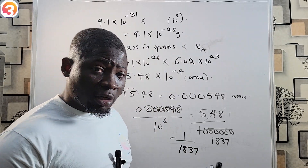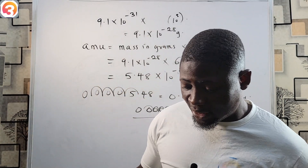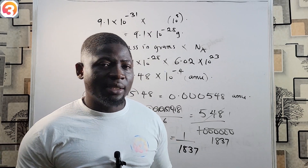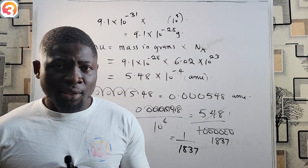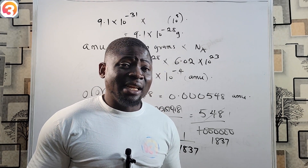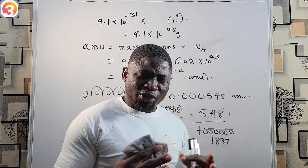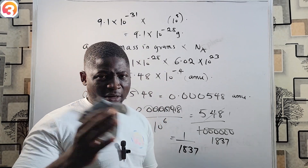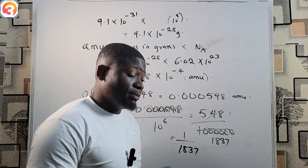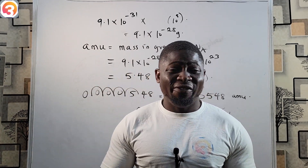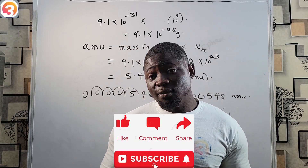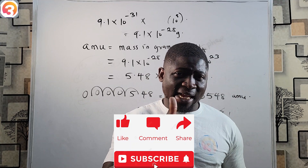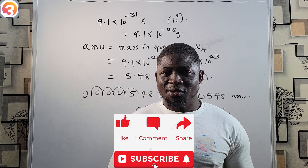This is where I'm going to stop the class. In our next class, we're going to be looking at Rutherford's model of the atom — also called the planetary model — and we'll also look at Niels Bohr's model. Please subscribe to this channel by clicking the red subscribe button, like this video, and share it with your friends and family. I'll see you in the next class — thanks for watching.